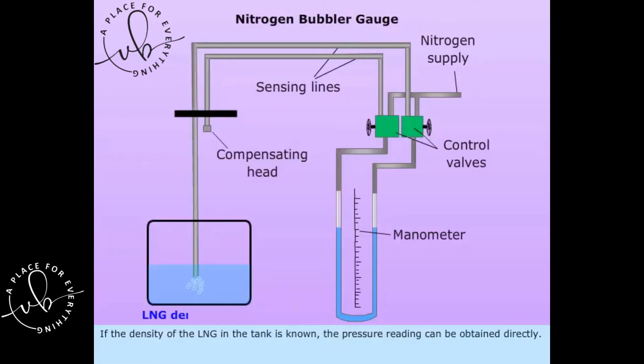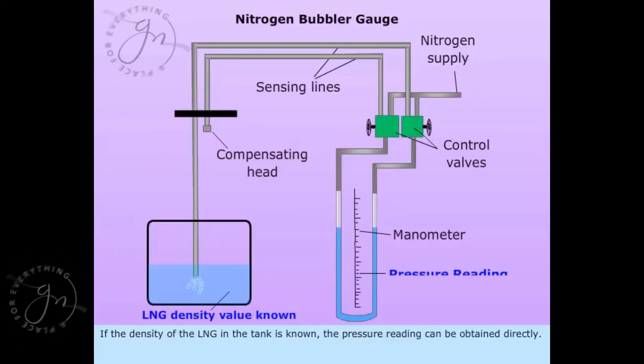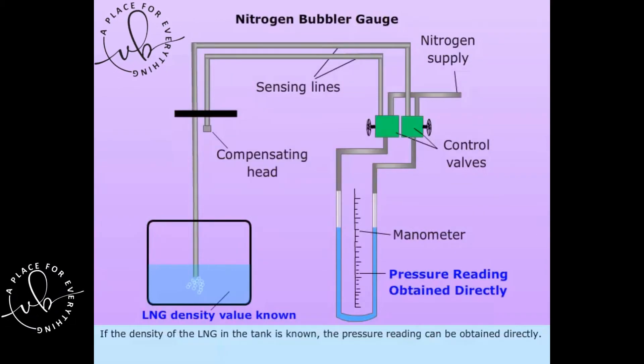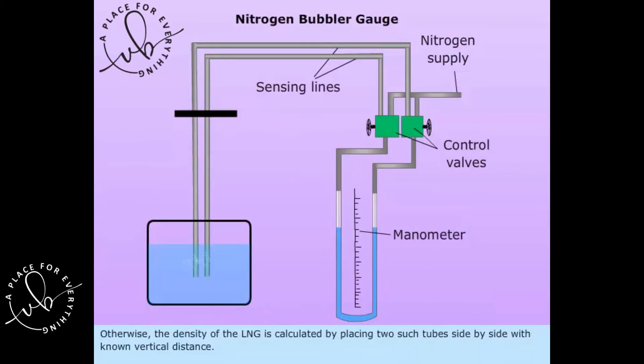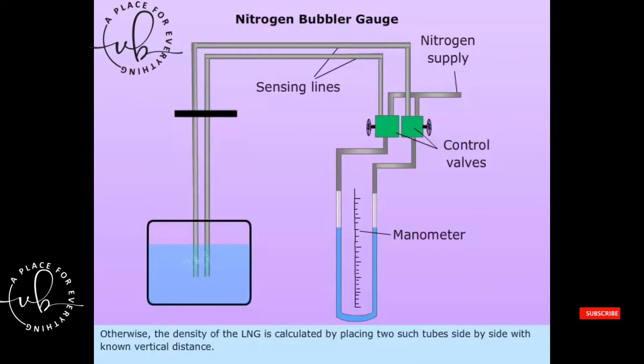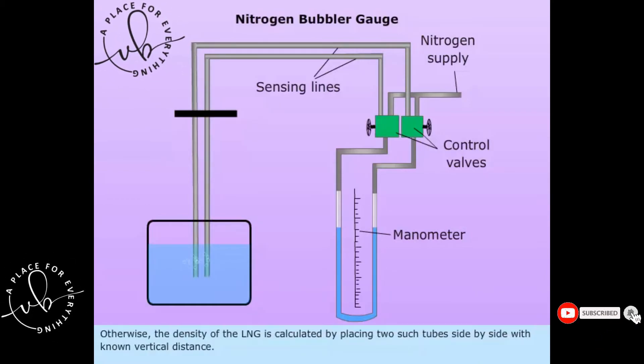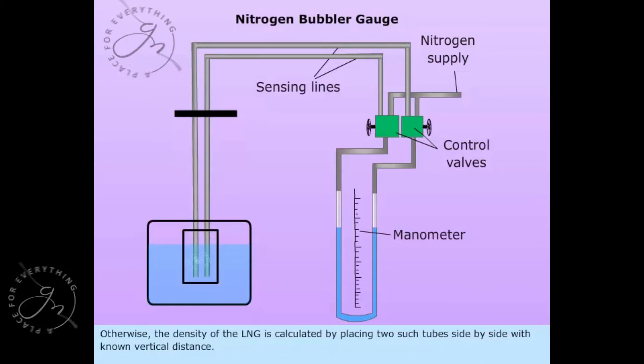If the density of the LNG in the tank is known, the pressure reading can be obtained directly. Otherwise, the density of the LNG is calculated by placing two such tubes side by side with known vertical distance.